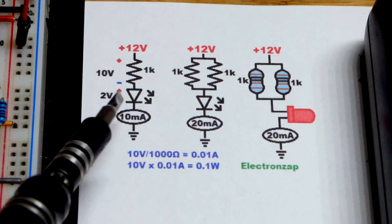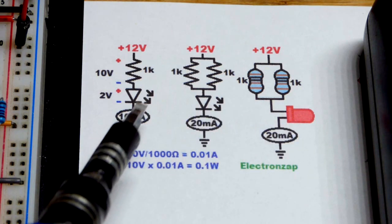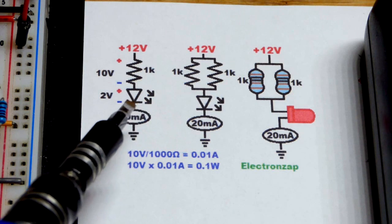So now in an earlier video, we looked at if you are protecting an LED, in this case a red LED from 12 volts, you're probably going to want at least a 1 kiloohm resistor.